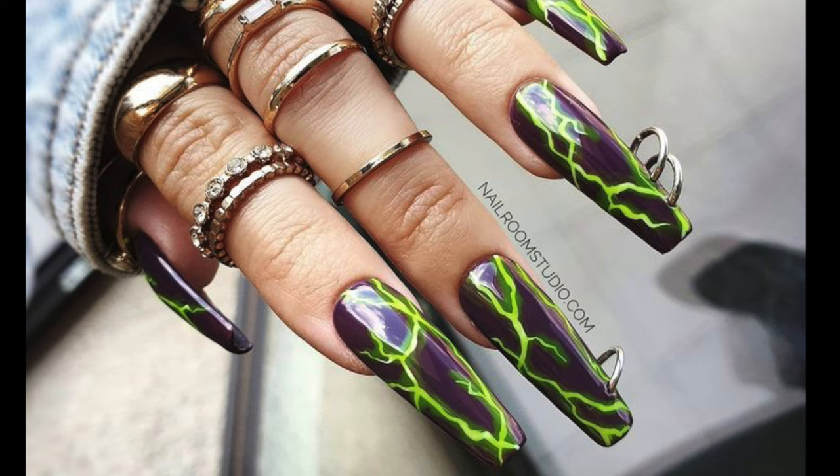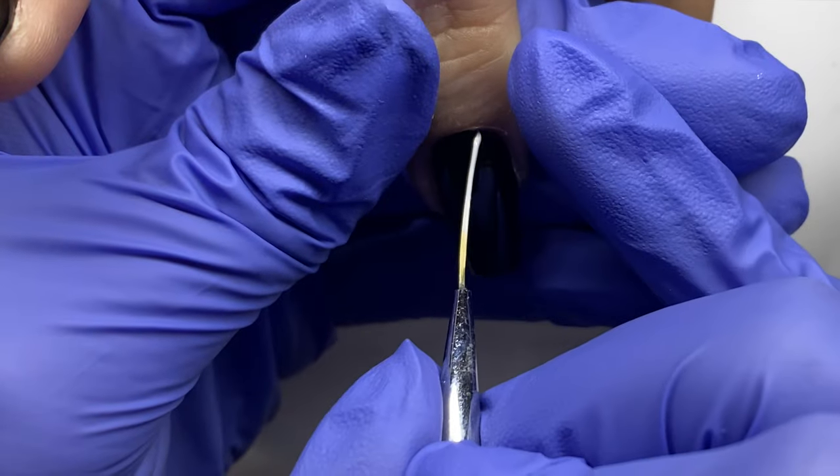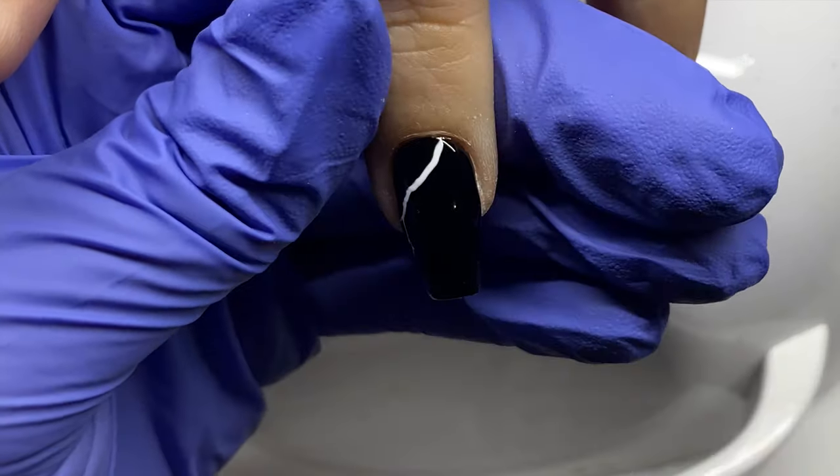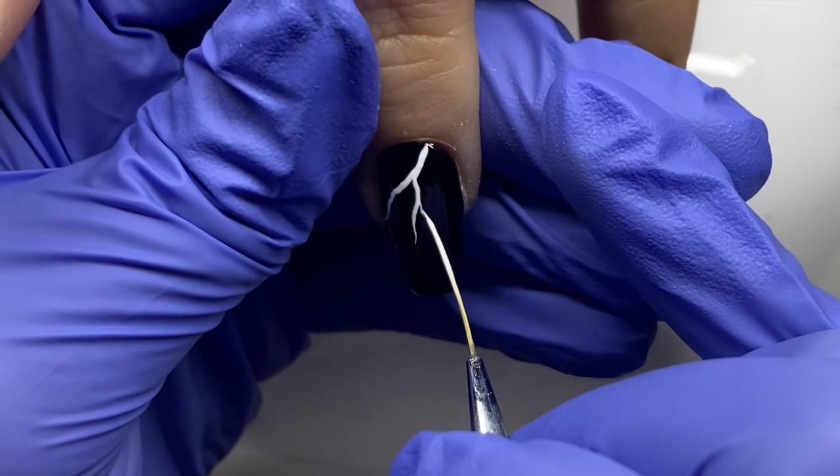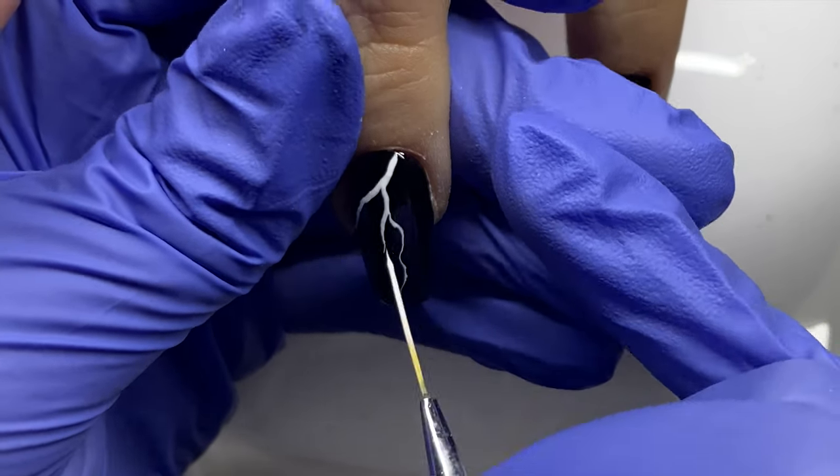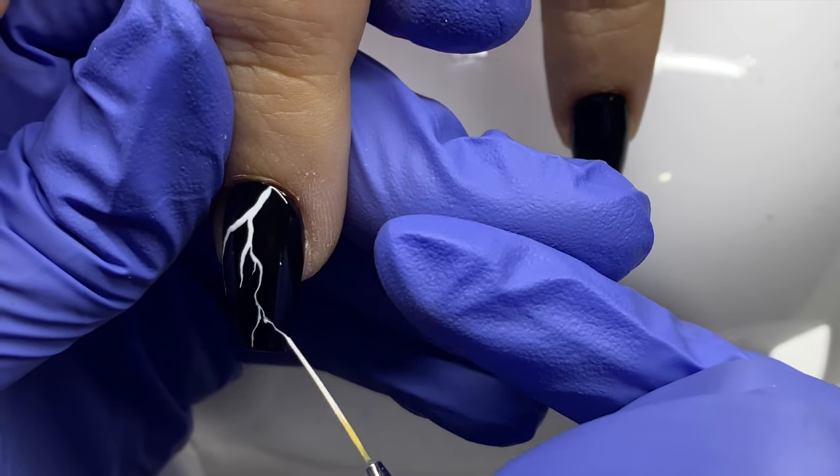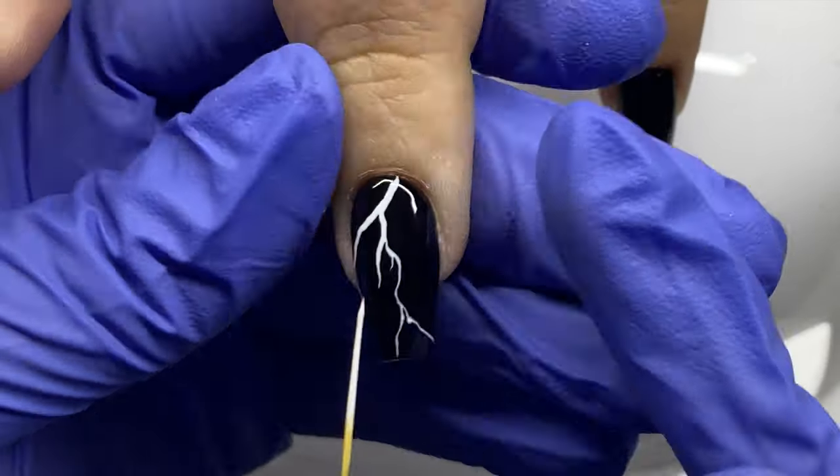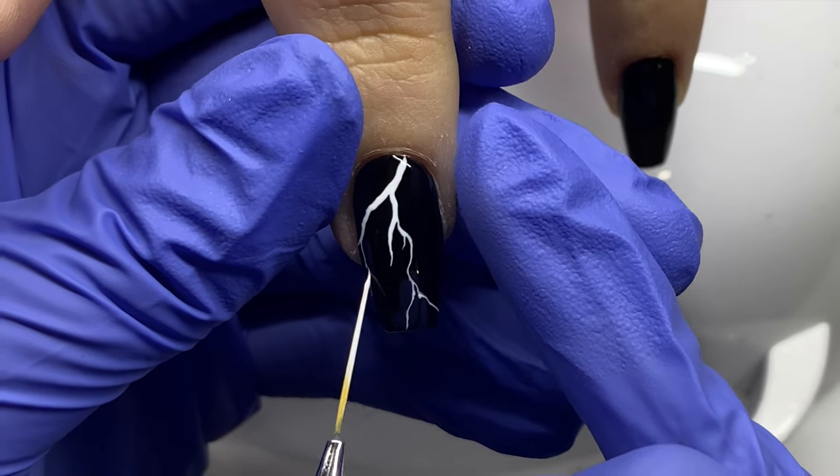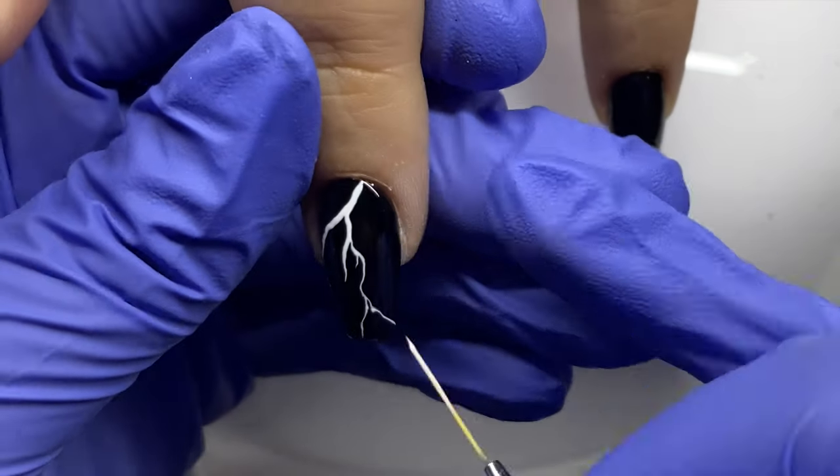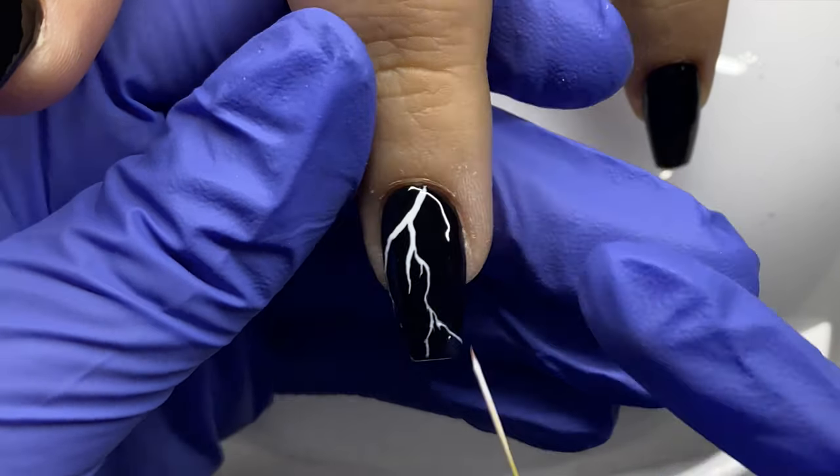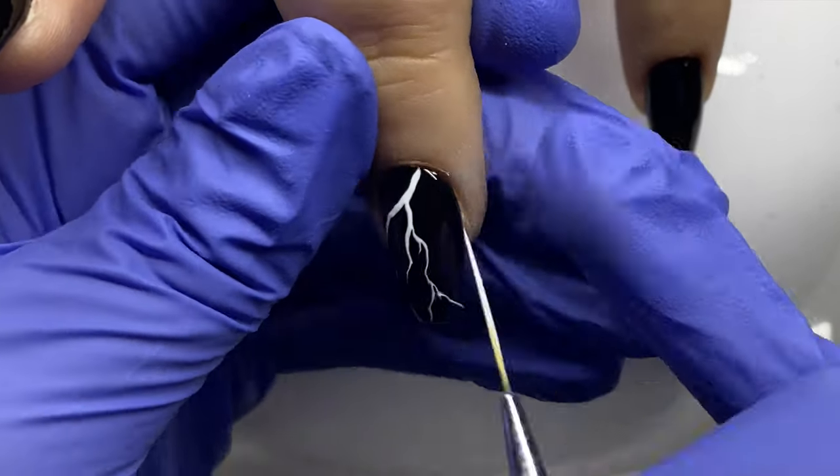I decided to start with a white gel polish. You can use an art polish or a pigmented gel polish. I'm not exactly sure what I was using at the time of recording this. I have a tendency to use Madam Glam Perfect White, but you can use any art gel polish that you want.